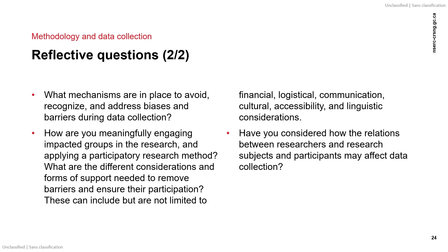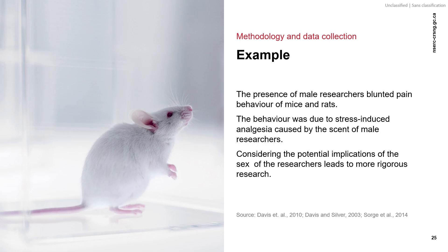Have you considered how the relations between researchers and research subjects and participants may affect data collection? It is well documented that power imbalances between researchers and their human research participants can profoundly affect research results. But the sex of a researcher can also affect animal research subjects. For example, research on pain experience showed that the presence of male researchers blunted pain behavior of laboratory mice and rats. This was a response not observed in the presence of female researchers. This difference was found to be due to stress-induced analgesia caused by the scent of male researchers. A methodology that considers the potential implications of the sex and identities of the researchers leads to more rigorous research.